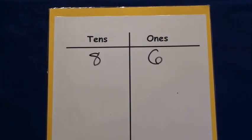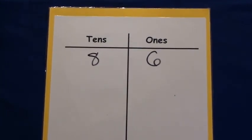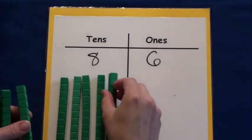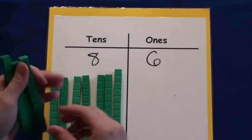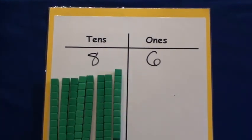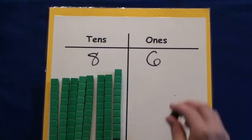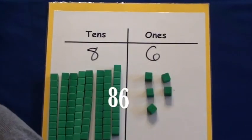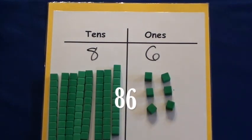Now let's look at the number eighty-six. There's an eight in the tens column. Eight tens represents the number eighty. Ten, twenty, thirty, forty, fifty, sixty, seventy, eighty. There's a six in the ones column. So I'll lay out six ones. That's eighty-six.